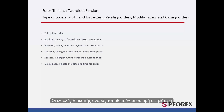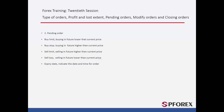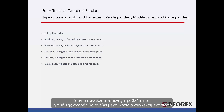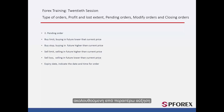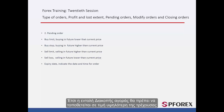Buy Stop orders are assigned at a higher price when a trader predicts that the market price will go up to a certain amount followed by further increase. Therefore, a buy stop order must be placed at a price higher than the current price.